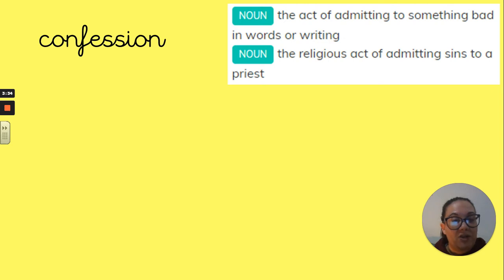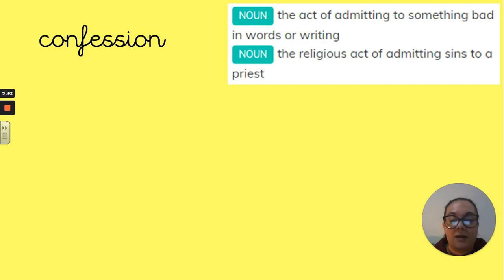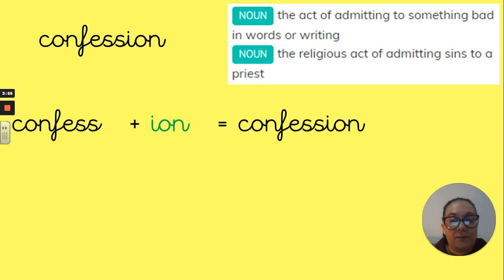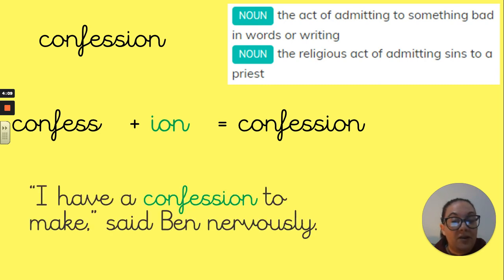Moving on, your next word is 'confession'. You have two meanings: the act of admitting to something bad in words or in writing, or the religious act of admitting sins to a priest. A confession is admitting to something. The root word here is 'confess'. Because it has that 's-s' ending naturally, you are going to add your 'i-o-n' and it will give you the word 'confession'. In a sentence: 'I have a confession to make,' said Ben nervously.